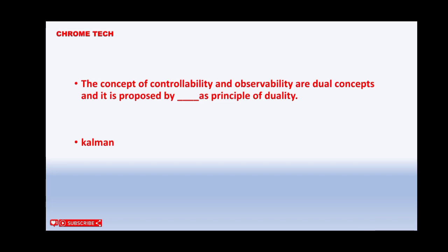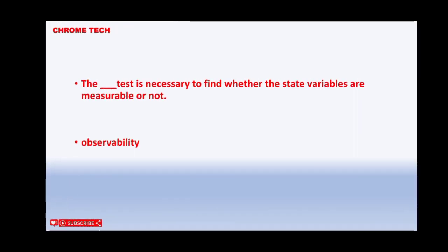Next question. The test is necessary to find whether the state variables are measurable or not. Observability is the correct answer.